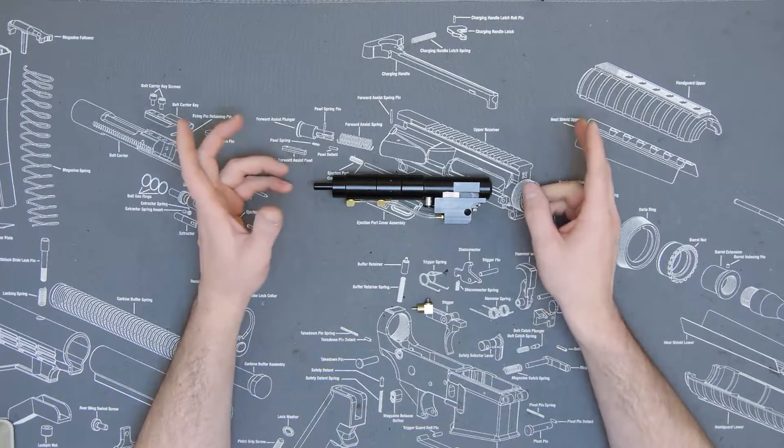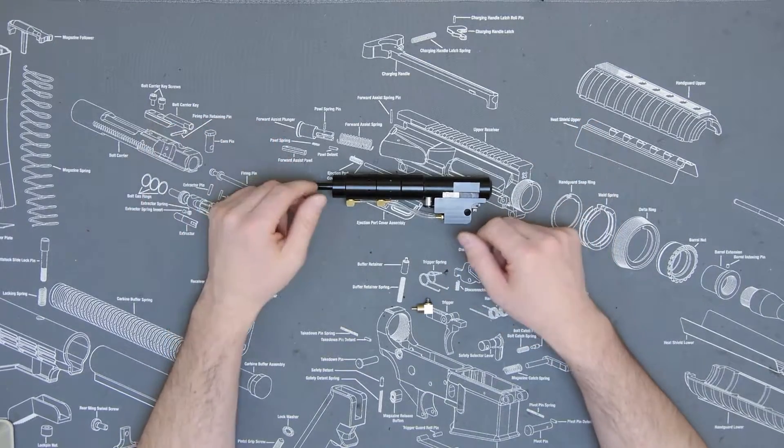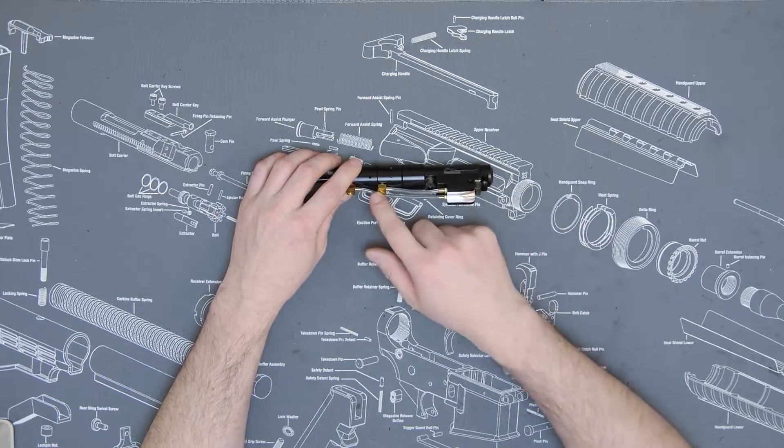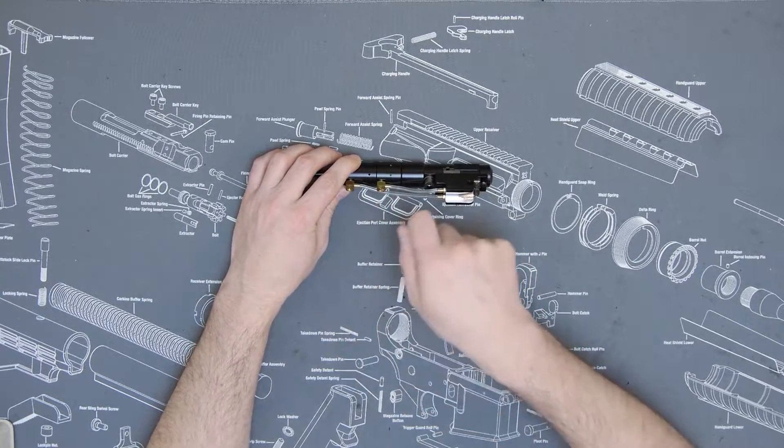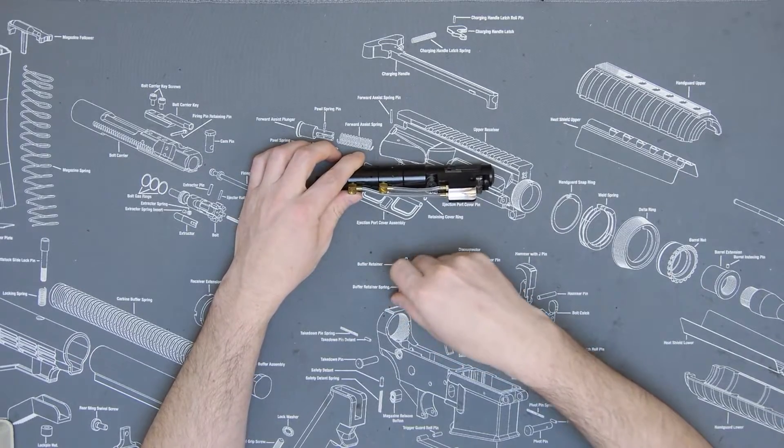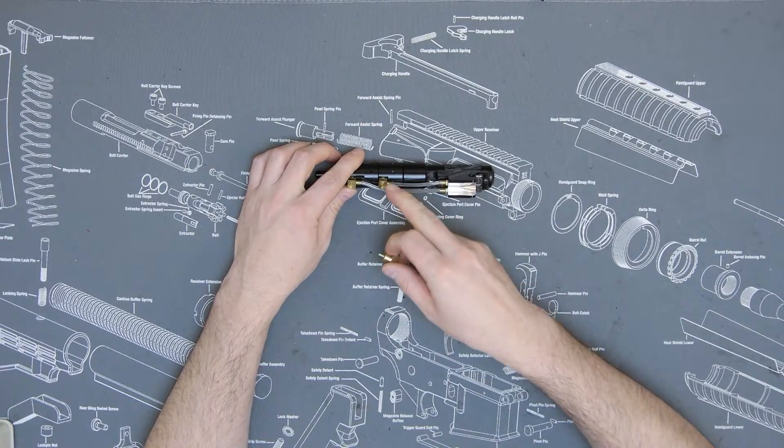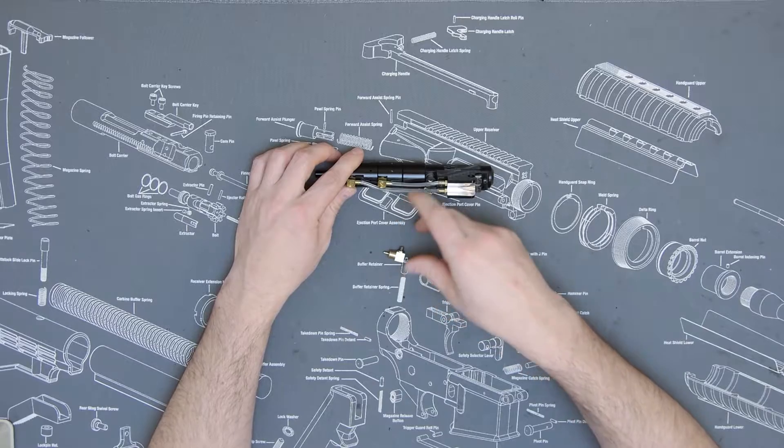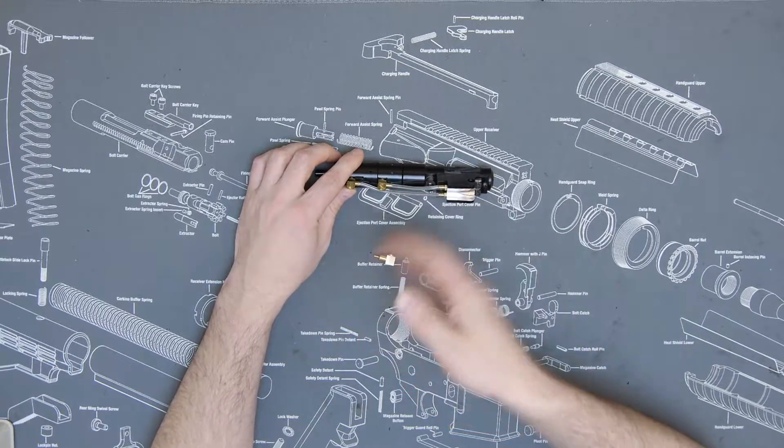There are two schools of thought when replacing these banjo fittings. One is you can take the banjo fitting off the line, measure, and cut the line. The shortcut that we're going to use today is to remove the banjo, install the QEV, and then cut the banjo off the line.